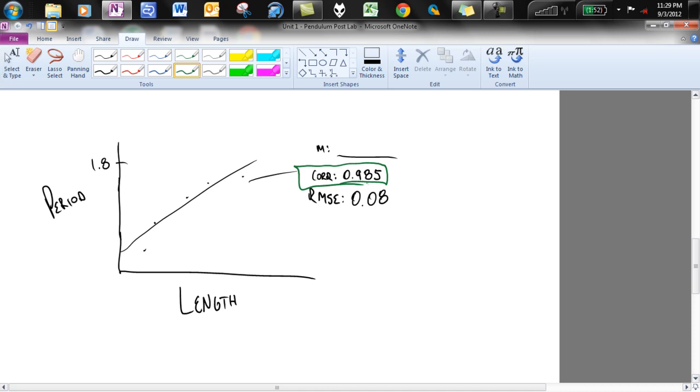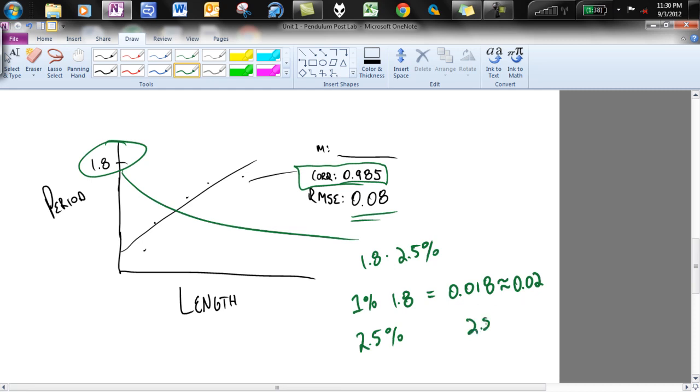And then we look at the RMSE as 0.08. Like I said, we give ourselves about 2.5% of the highest Y value. So I take this Y value, which is 1.8, and I multiply it by 2.5%. The other way that you could do this very fast, 1% of 1.8 just means move the decimal place over two times, so you get 0.018. For our purposes here, I'm going to say 0.02. So that's 1%. If I want 2.5% of that value, what am I going to do to that number? I'm just going to multiply it by 2.5. So 2.5 times 0.02, well, you'll notice that we'll have 0.05 in this case.